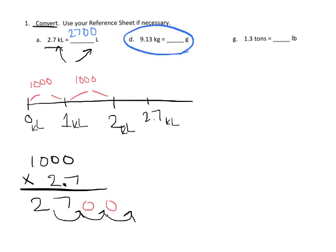Same exact problem here, only instead of kiloliters we've got kilograms. So we would multiply 9.13 times a thousand and that moves this decimal three places to the right giving us 9,130.